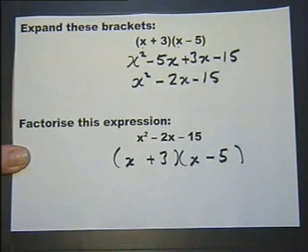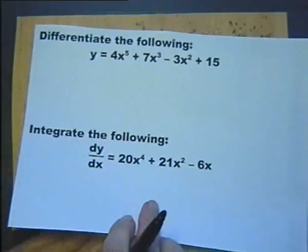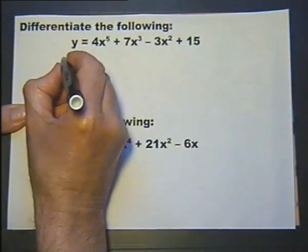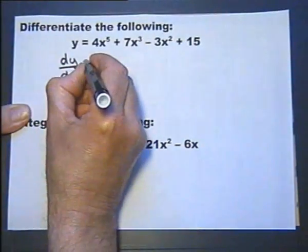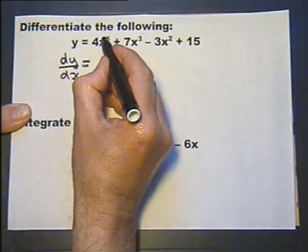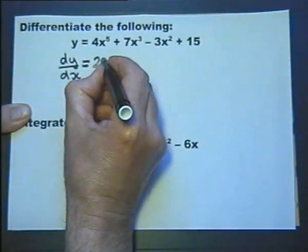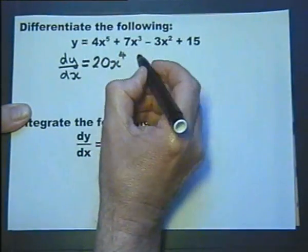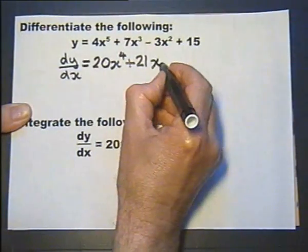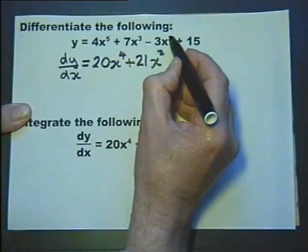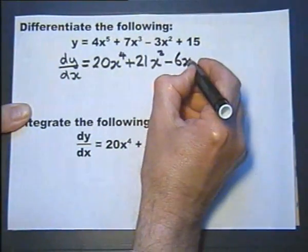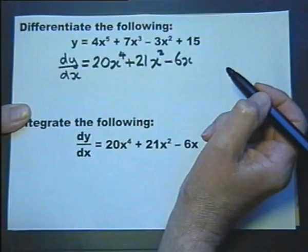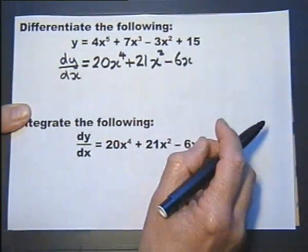Integration is the reverse process of differentiation. Let's look at that: differentiate the following equation. We work out dy/dx — that's differentiating. We go 5 times 4, dropping the power by 1; then 3 times 5 times 4, drop the 3 down by 1 power; then 2 times minus 3, drop that down by 1 power; and differentiating a constant — the number disappears. This is differentiation.